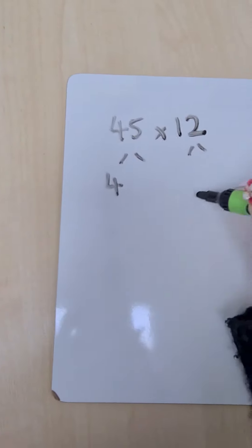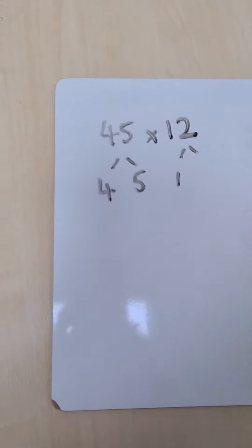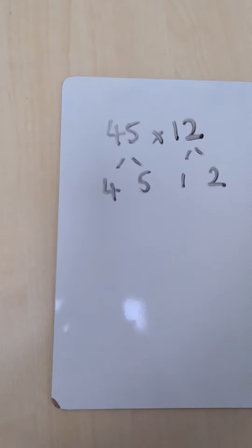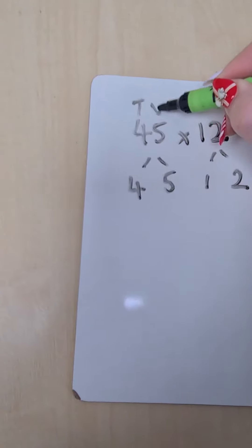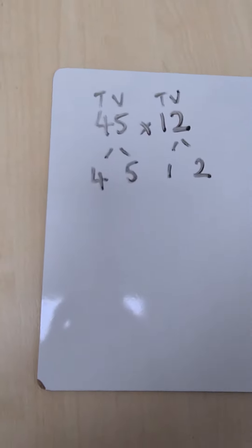So we have four tens in the number 45 and we have five units. I have one ten in the number 12 and I have two units. The children are by now familiar with these terms. We call it place value.